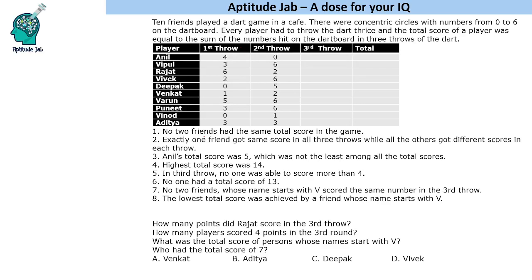The first condition says no 2 friends had the same total score in the game — so all totals are unique. The next condition says exactly 1 friend got the same score in all 3 throws while all the others got different scores in each throw. Looking at the table, we can figure out that this person must be Aditya, because Aditya is the only person having the same score in the first 2 throws. So in the 3rd throw he will also score 3, making his total 9. Remember that all throw values have to be unique per player, and all totals have to be unique.